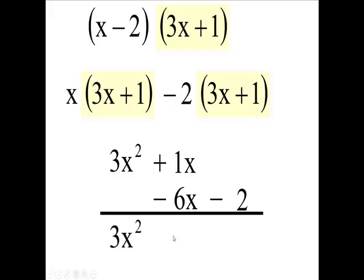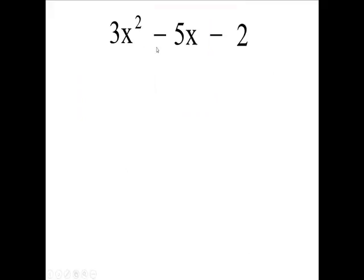And negative 2 times 1 is a negative 2. So I end up with 3x squared minus 5x minus 2. That's the product of these two terms.